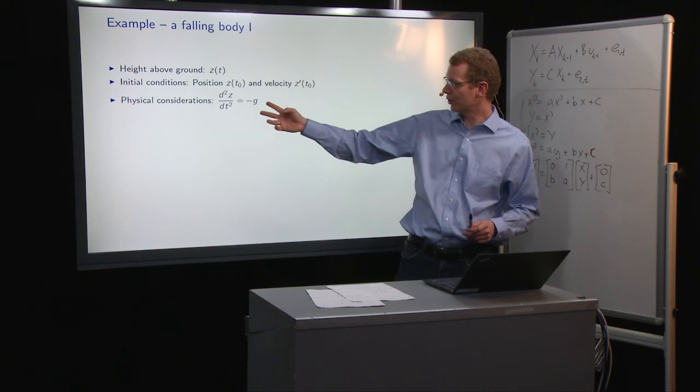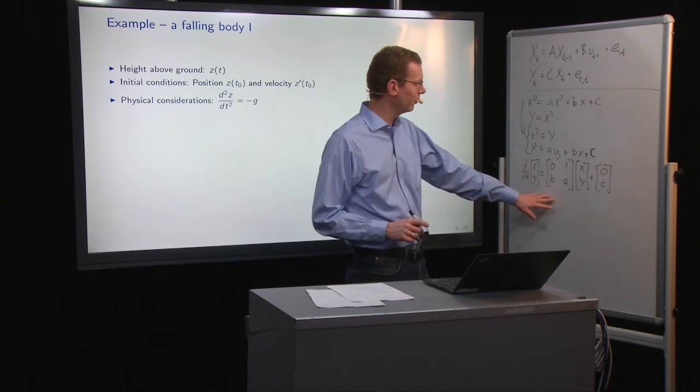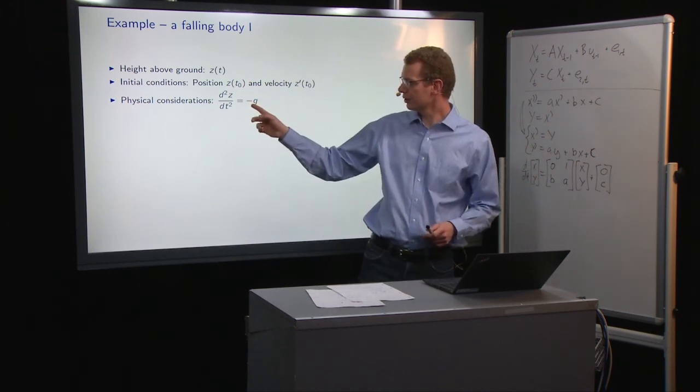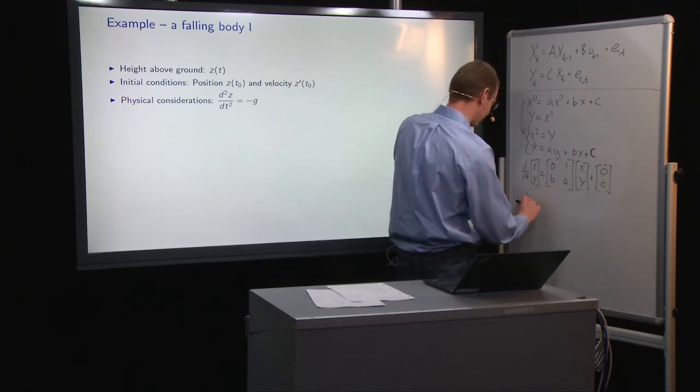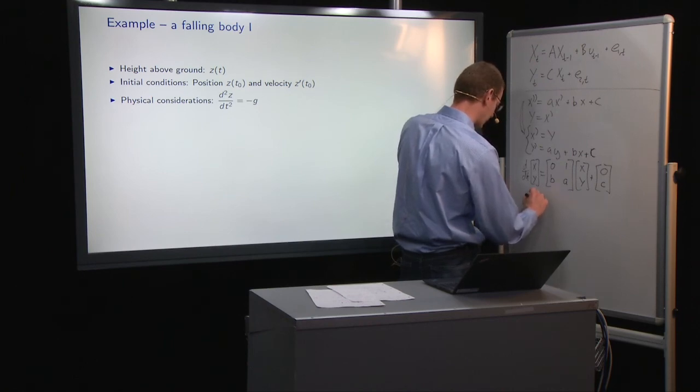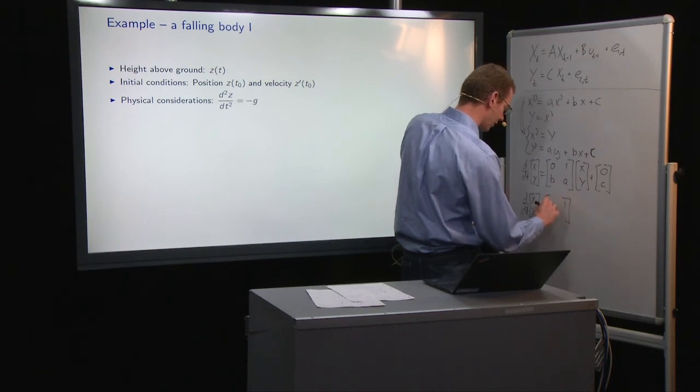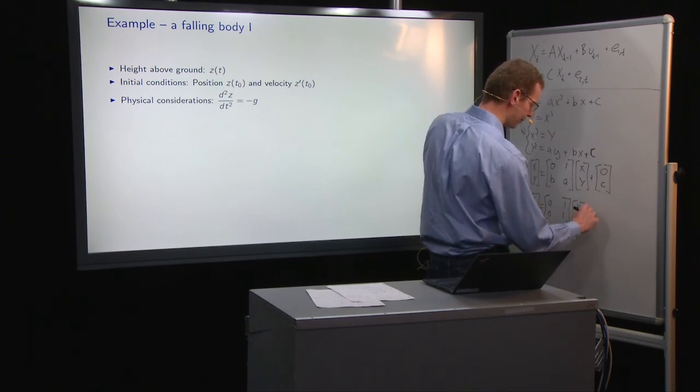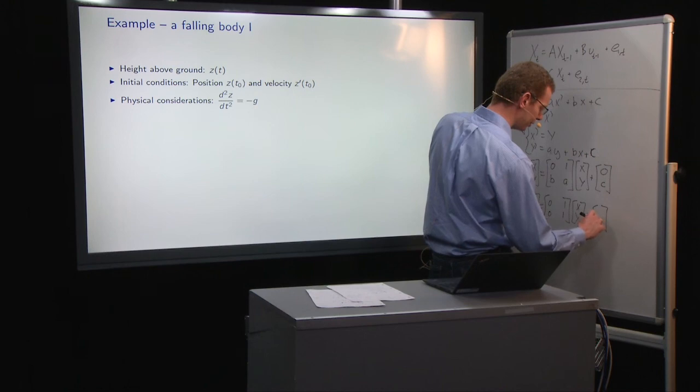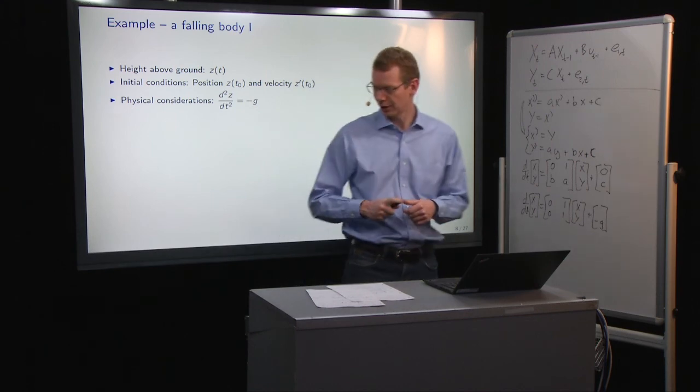Now if we take the model from over here and look at this, how does that correspond to what we have here? Well, basically we only have a constant, a and b are equal to 0, so the falling body here has the following d/dt of x and y. x and y is a matrix where there's a 1 in the upper right corner and then just zeros. x, y plus, and here the constant is minus g. So that's the equation that we have.